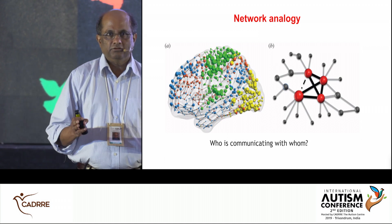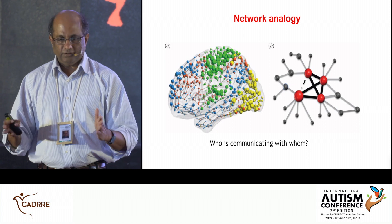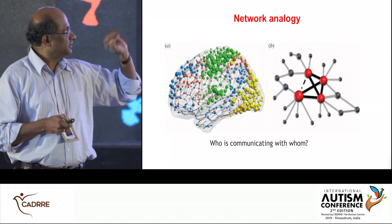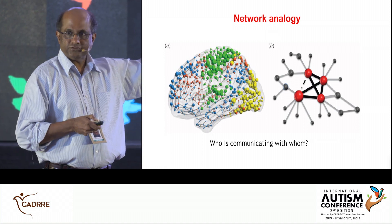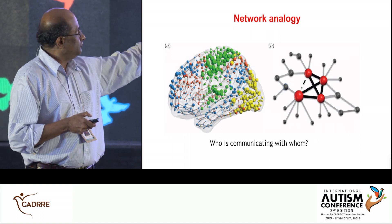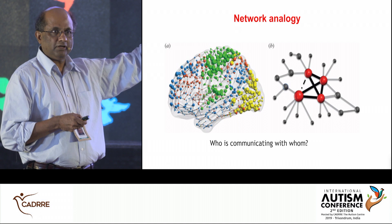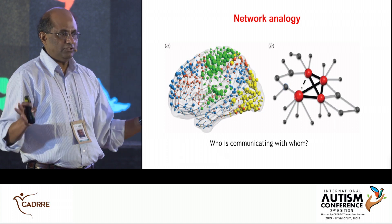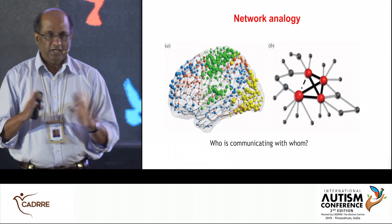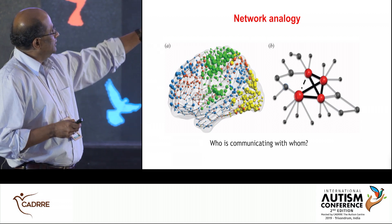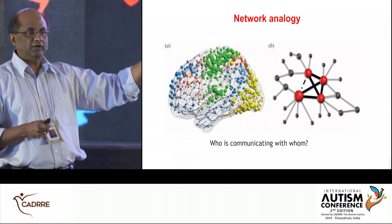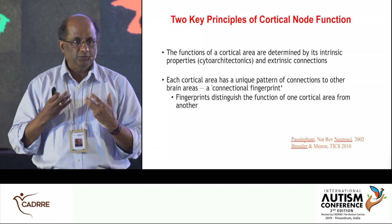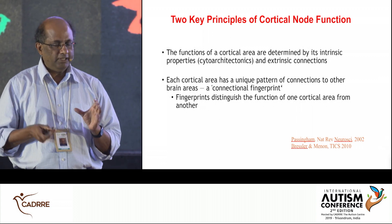One metaphor that has emerged for thinking about brain function is a network analogy: the brain consists of multiple nodes communicating with each other. There are hubs — the red dots — where each dot reflects one part of the brain talking to different parts. If hubs are disrupted, you'd see major disruptions to human behavior; the black nodes impact more locally and may not have such severe consequences.